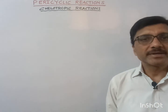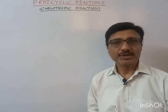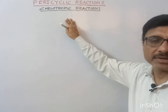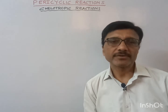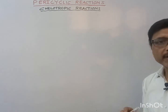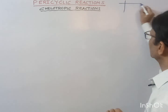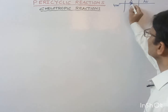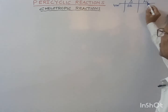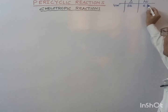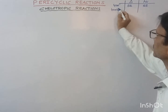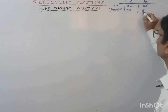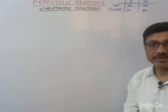Hello friends, welcome to pericyclic reactions. Today I will explain chelotropic reactions. This chelotropic reaction is also an example of cycloaddition reaction. For cycloaddition reactions, the selection rule we follow: for a 4-electron system and for a 4+2 electron system, under thermal condition we have suprafacial-antarafacial interaction, and under photochemical condition suprafacial-suprafacial interaction. For a 4+2 electron system under thermal condition, suprafacial-suprafacial, and under photochemical condition suprafacial-antarafacial interaction takes place.